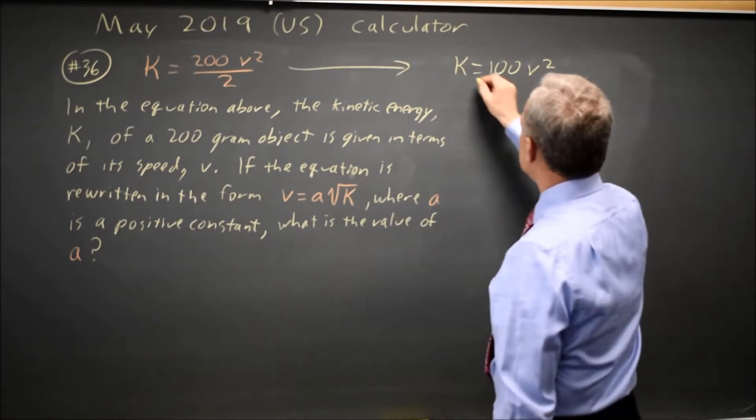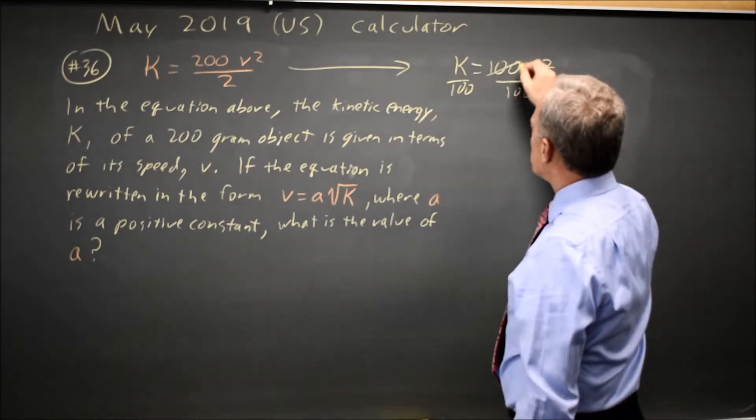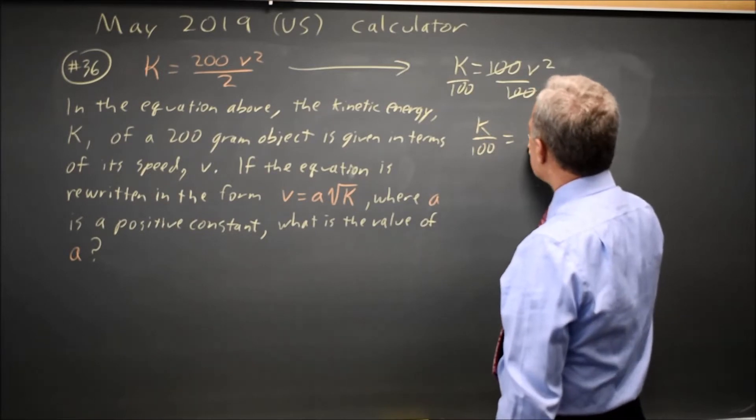Divide both sides by 100 because I'm trying to get V by itself. And 100 over 100 is 1. So I have K over 100 equals V squared.